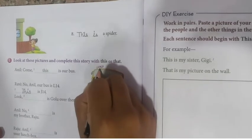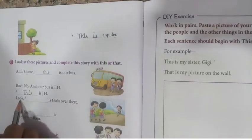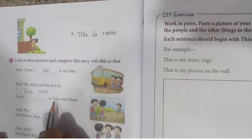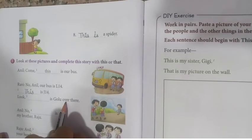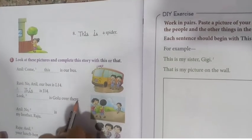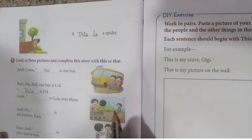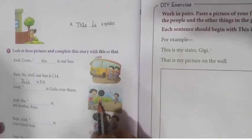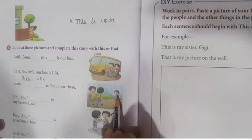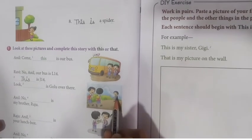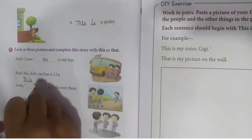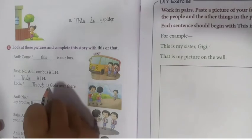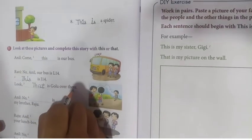Read: 'Look, dash is Golu over there.' Dekho — yahan se Golu aa raha hai. So, it is far — woha se aa raha hai. Toh hum kya likhenge? 'That.' That is Golu over there.